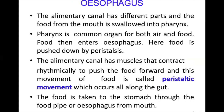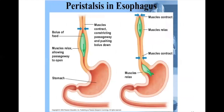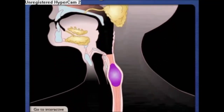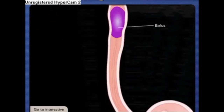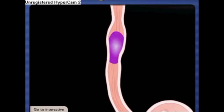Food then enters the esophagus, where it is pushed down by peristalsis. The alimentary canal has muscles that contract rhythmically to push the food forward — this movement is called peristaltic movement, which occurs all along the gut. The food is taken to the stomach through the esophagus from the mouth. The one-way movement of the food mass, now called a bolus, is controlled by wave-like involuntary muscle contractions, known as peristalsis.